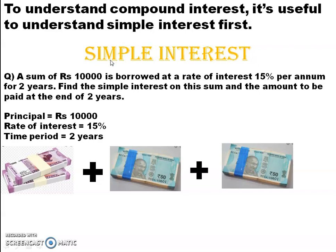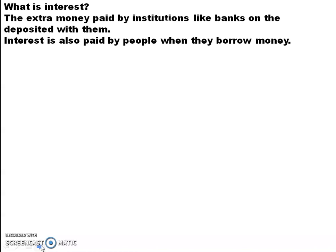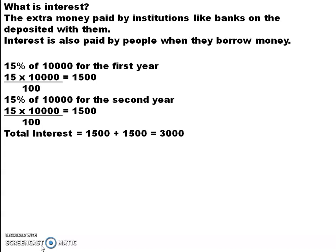The extra money you pay is known as simple interest. At the end, you have to pay an increased amount. This is the amount which you borrowed, but this is the amount you are going to repay — it is not the same amount. The extra amount is what you call interest. The extra amount paid by the person to the bank is known as interest. If you take money from the bank you have to pay interest; if you deposit money, the bank will give you interest.